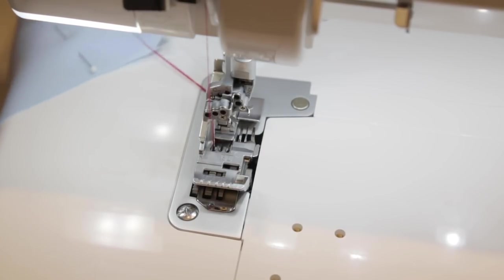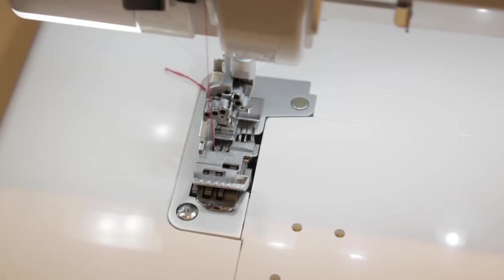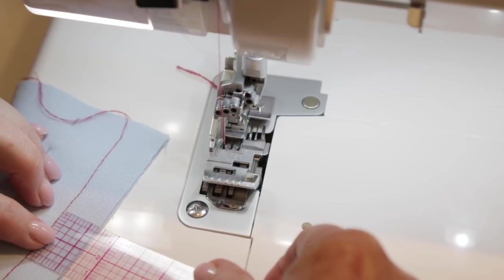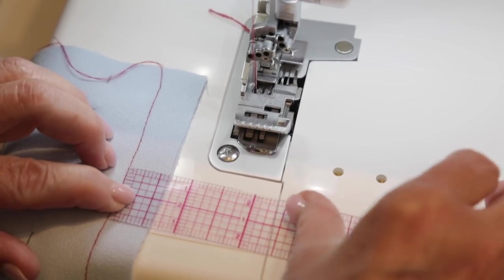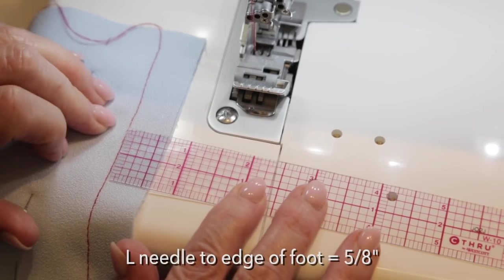And on the Triumph I can chain off, so check your manual to see if you can do the same thing. All right, so let's just double check that. Can you see? Exactly 5/8 of an inch for the seam allowance.